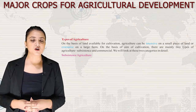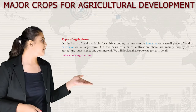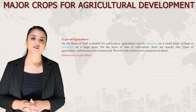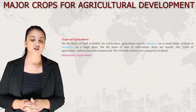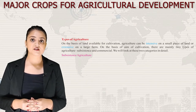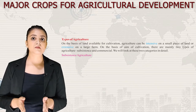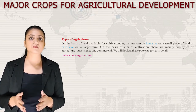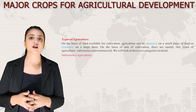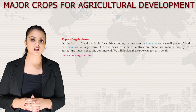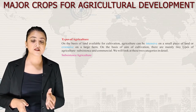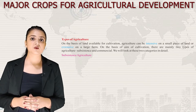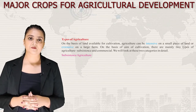Here is an image of tractors that are widely used in farming. Now let's talk about types of agriculture. On the basis of land available for cultivation, agriculture can be intensive on a small piece of land or extensive on a large farm. On the basis of aim of cultivation, there are two types: subsistence and commercial agriculture.